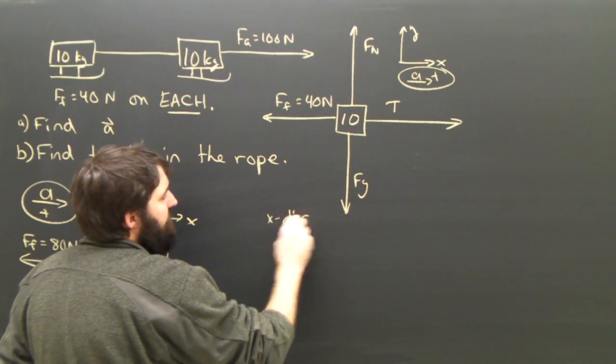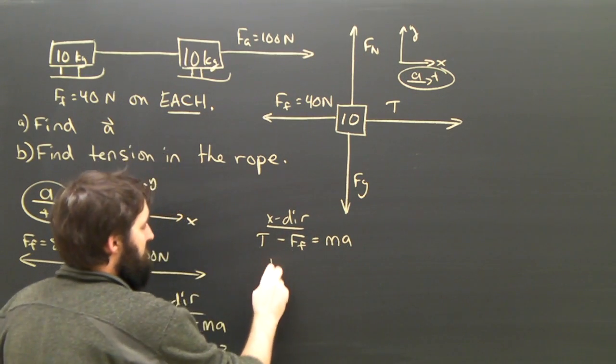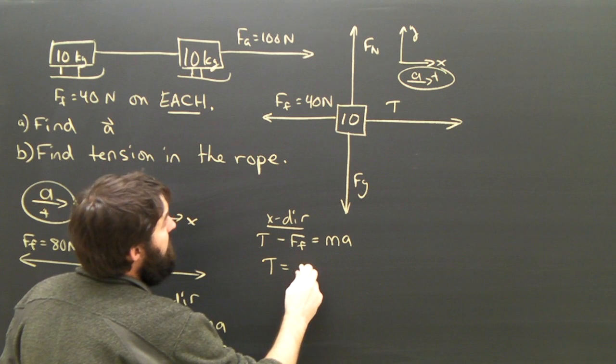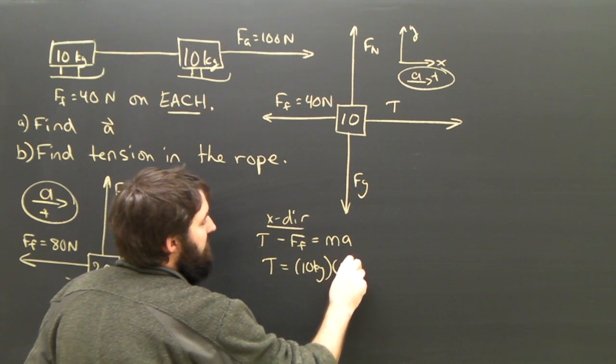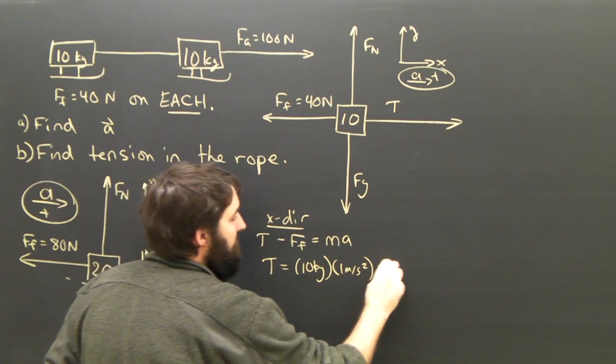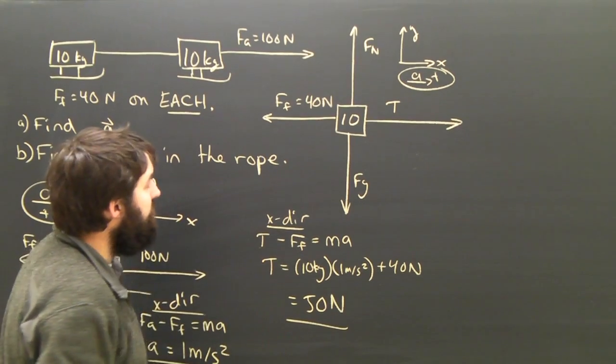In the x-direction, T minus Ff equals ma, which means tension equals 10 kilograms times 1 meter per second squared plus 40 newtons, which equals 50 newtons.